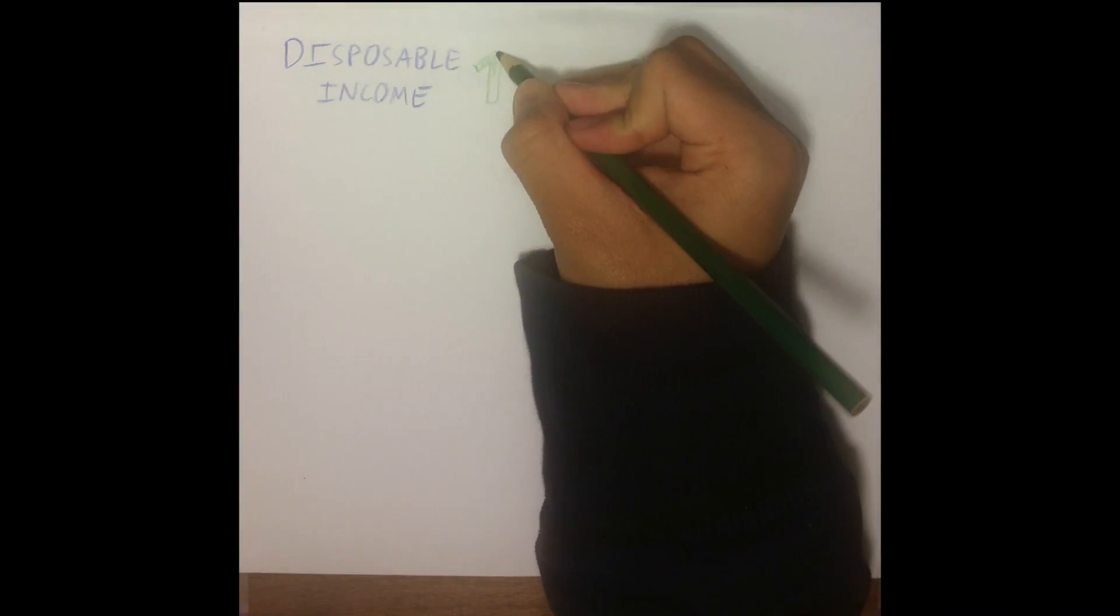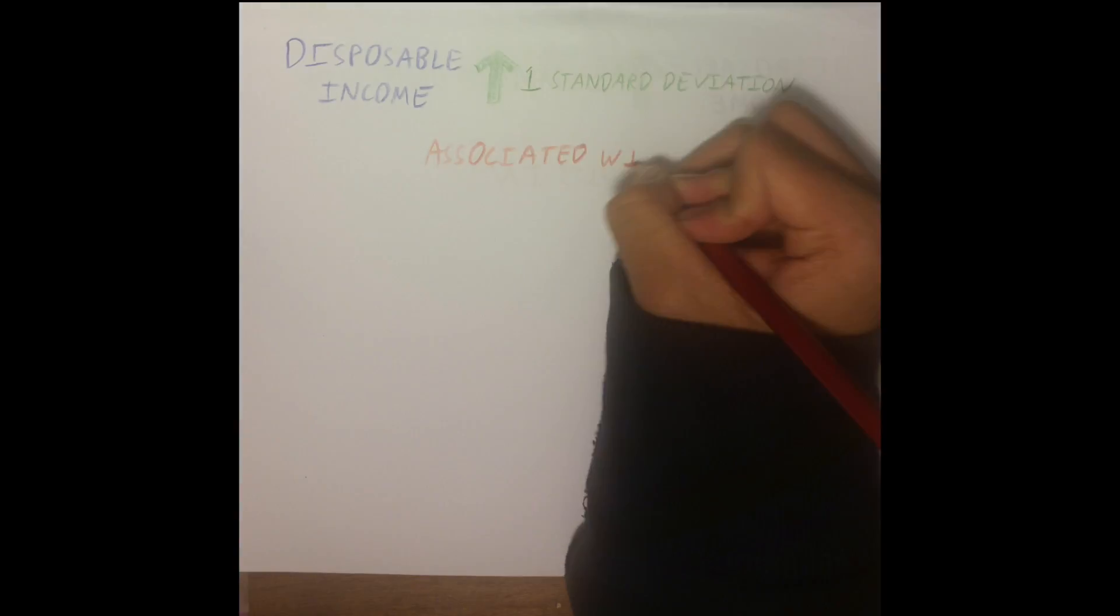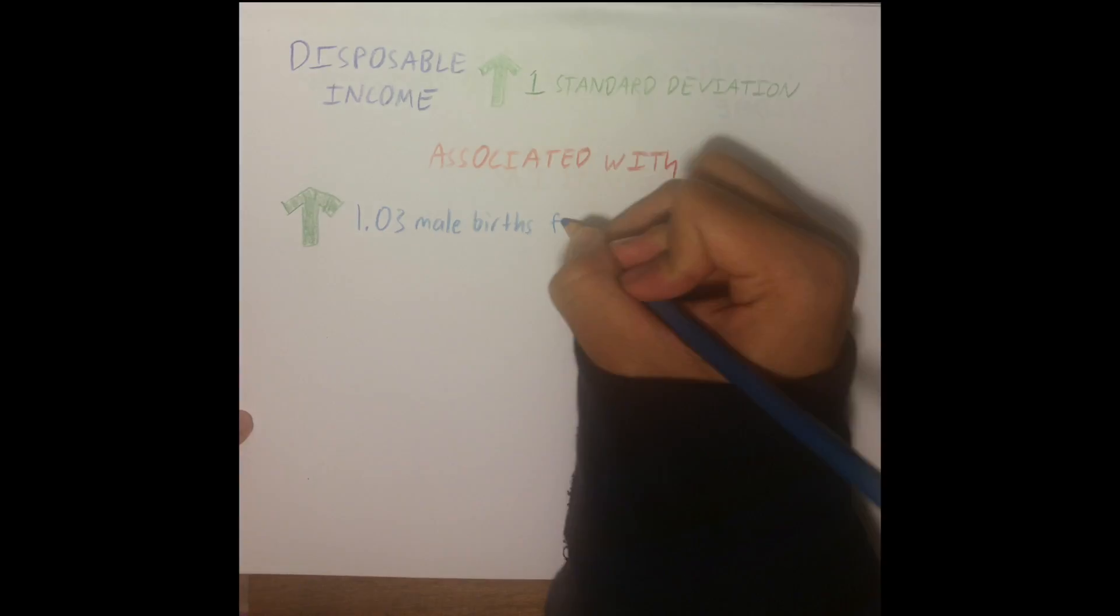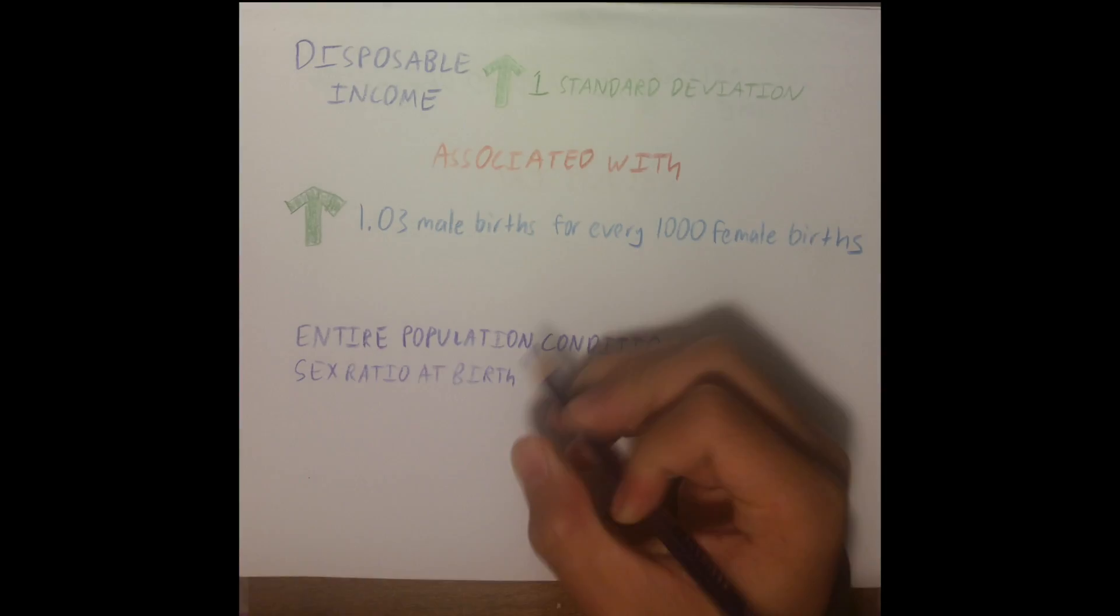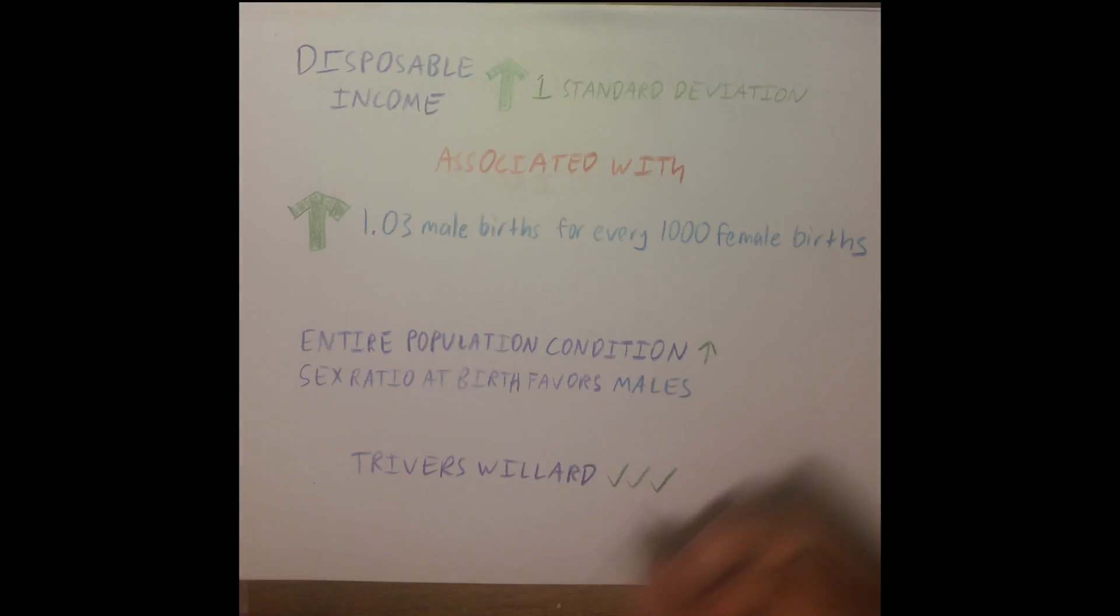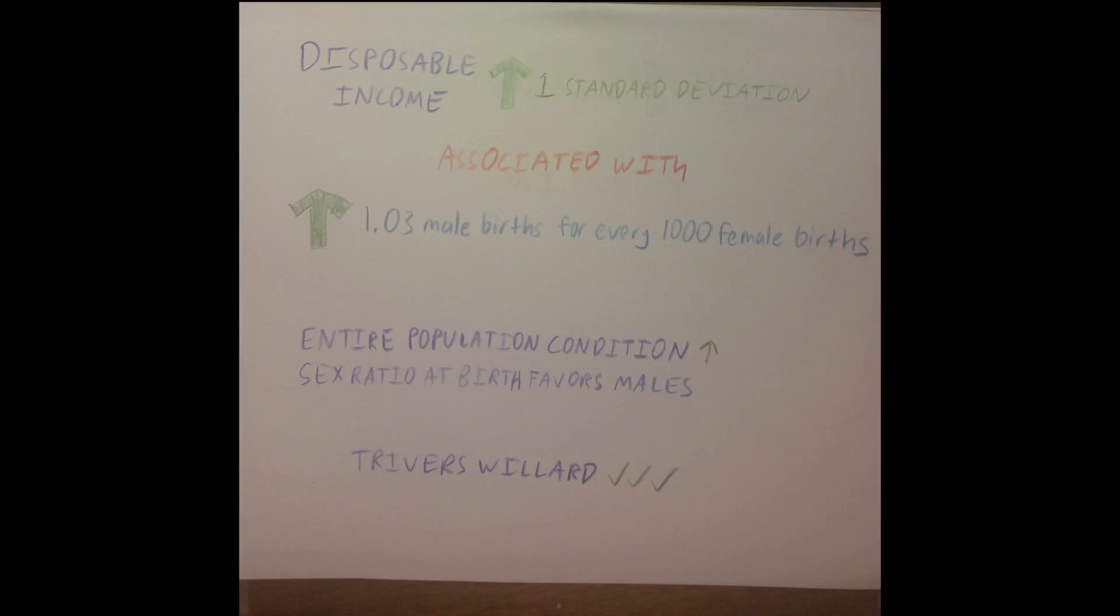By looking at changes in disposable income and its effects on sex ratio at birth, they found that a one-standard deviation increase in a country's disposable income is associated with an increase of 1.03 male births for every 1,000 female births. This suggests that even an improvement of an entire population's condition can be correlated with a sex ratio that tends to favor males.